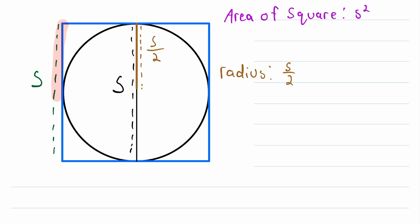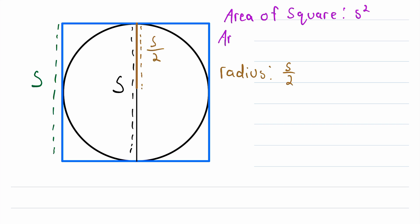That's half the side length of the square that it is inscribed in. So the area of the circle is equal to π multiplied by the radius squared. The radius is S/2, so that's π times (S/2)².